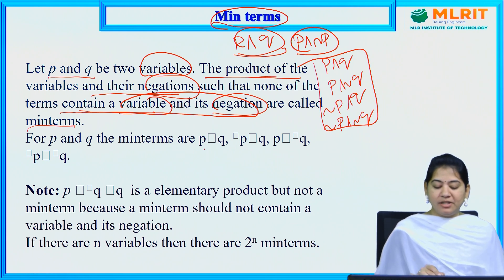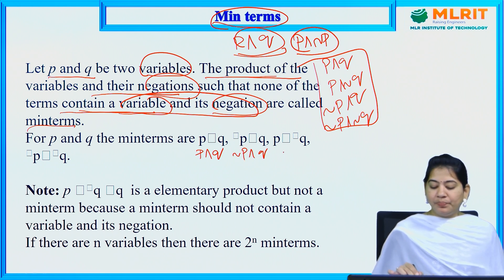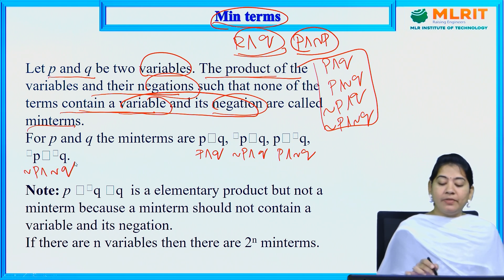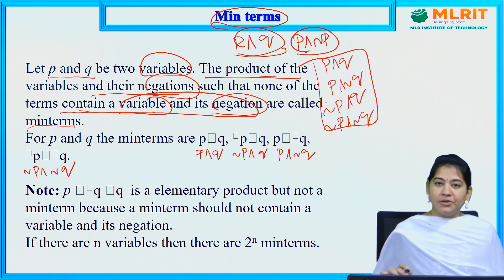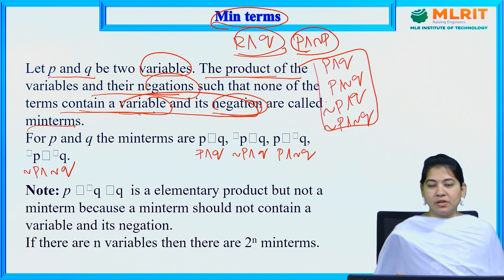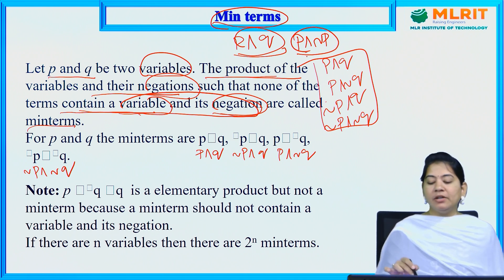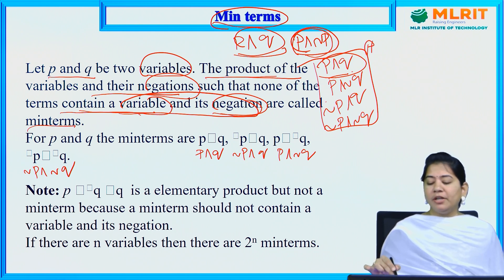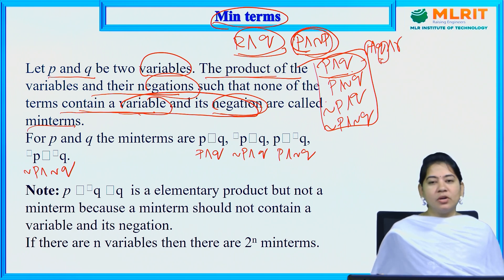So this is P and Q, ¬P and Q, P and ¬Q, and ¬P and ¬Q. The difference between an elementary product and a min term is: in an elementary product, a variable and its negation are accepted, but in a min term they are not. For any product term, all variables must be different — not just for two variables but for three variables as well. A product of a variable and its own negation is not accepted in min terms.